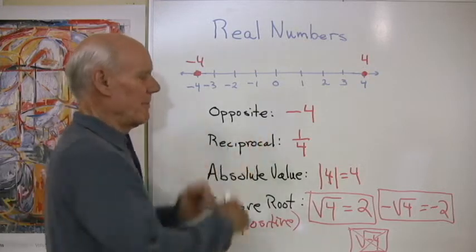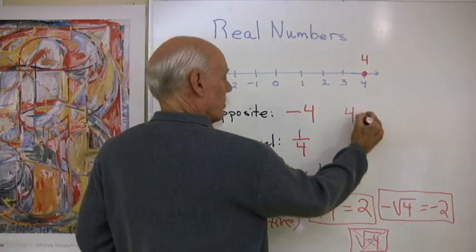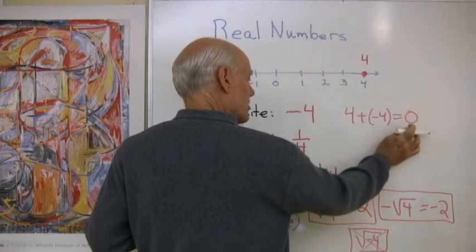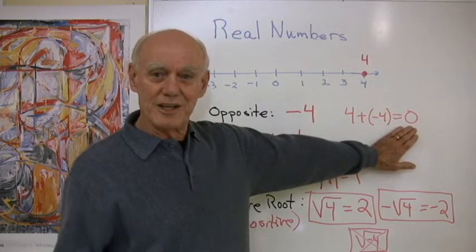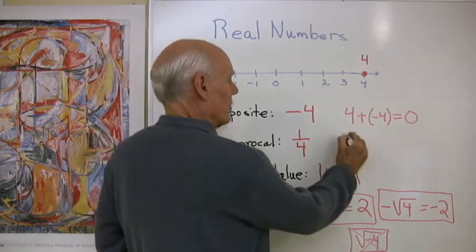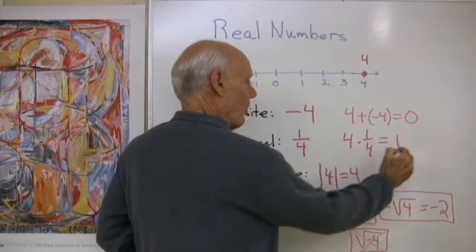So what's the deal with opposites? Well, opposites always add to zero. So four plus negative four turns out to be zero. Zero is a special number in mathematics because any time you add zero to a number, it doesn't change the number.